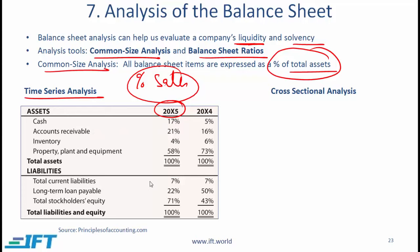Similarly, total current liabilities are 7% of total assets. If you do a simple analysis between 2004 and 2005, it looks like the cash position is improving, but the accounts receivable position is deteriorating because the accounts receivable amount is going up to 21% of total assets — a substantial increase from the previous year.